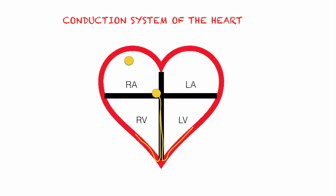The first concept we're going to discuss is the conduction system of the heart. The conduction system consists of special cardiac cells responsible for conducting signals that cause the heart to contract. The first cell is called the SA node, or the sinoatrial node. By its name — sinoatrial — this cell is found within the right atrium of the heart. This is also known as the natural pacemaker of the heart, because this is where the beginning of the conduction takes place.